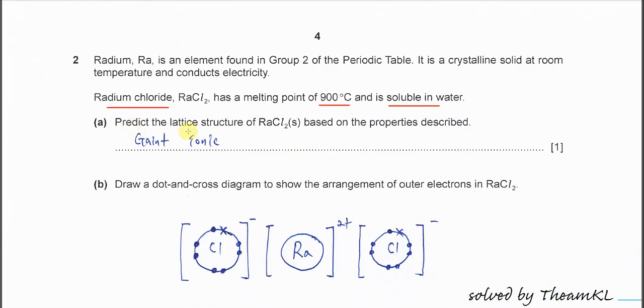Now predict the lattice structure of radium chloride based on the properties described. The melting point is quite high at about 900 degrees C, so we know that this must be a giant structure. The lattice structure means giant or simple.